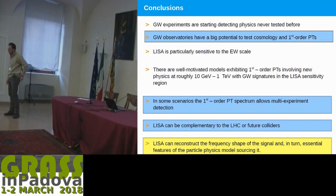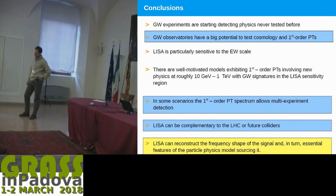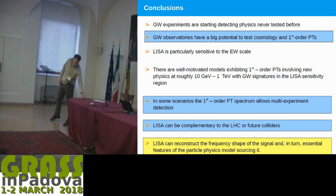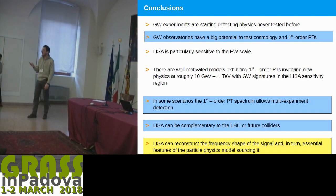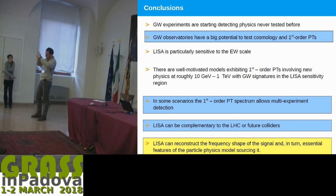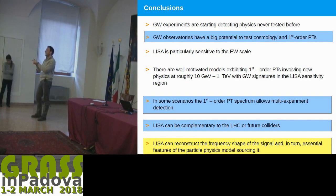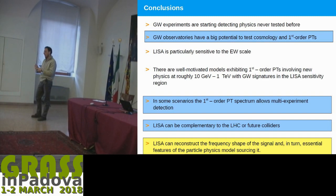Question: for ground-based detectors we need more detectors and correlate them for stochastic background searches. With LISA you have only one observatory and a lot of astrophysical background — how does that work? Answer: with LISA you have three satellites, so naively three interferometers. One of them is a linear combination of the other two, so you effectively have at least two, similar to having two LIGOs. Second, you can also use the Sagnac channel, which at high frequency should be free of noise to first approximation.